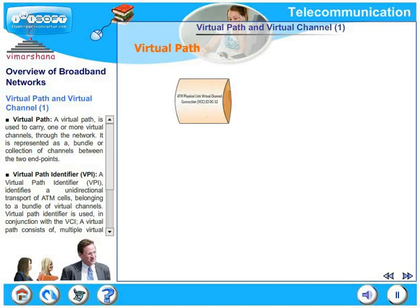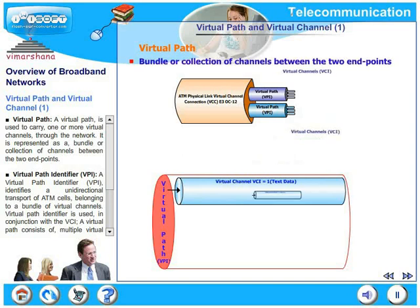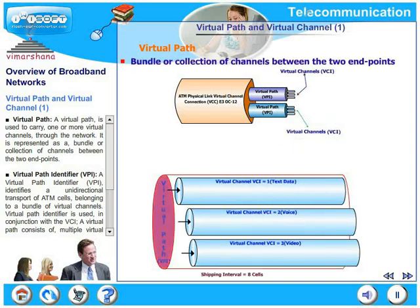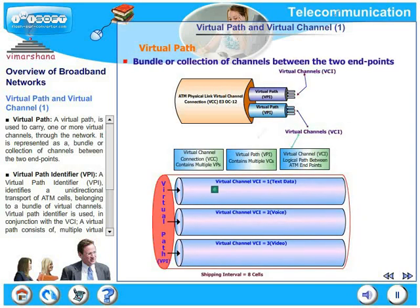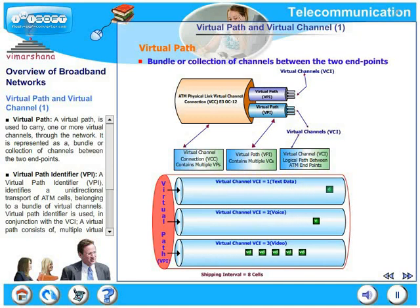A Virtual Path is used to carry one or more Virtual Channels through the network. It is represented as a bundle or collection of channels between the two endpoints. The figure will bring out this concept very clearly.